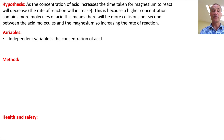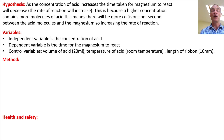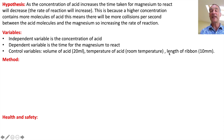For the variables: the independent variable is the concentration of acid. The dependent variable is the time for the magnesium to react — it depends on the concentration. The control variables are those that also affect how quickly the magnesium reacts: the volume of acid (20 mL), the temperature of the acid, and the length of magnesium ribbon (10 mm). It's important to include the actual values to make it really clear how you are controlling those variables.